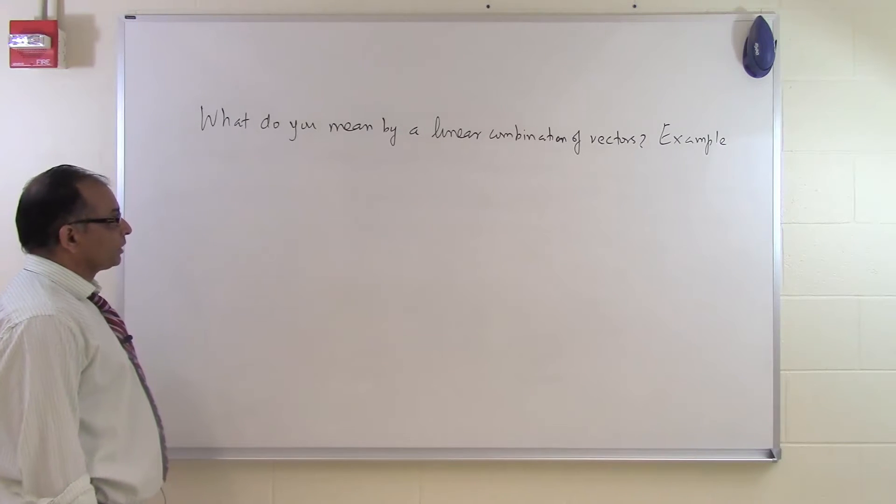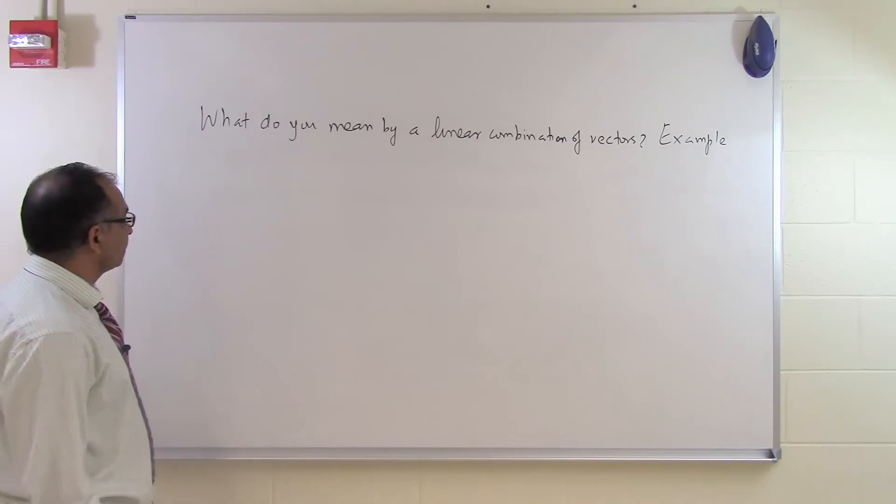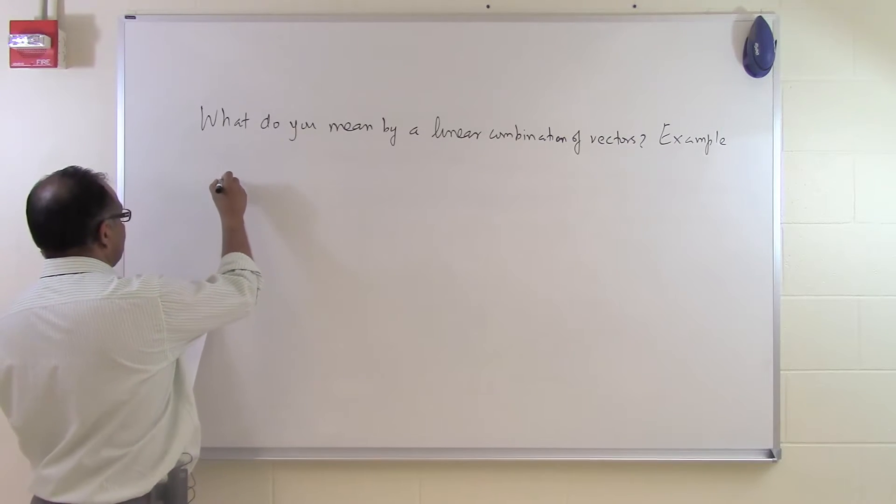In this segment we'll talk about an example of a linear combination of vectors. Let's suppose somebody gives you, says that hey,